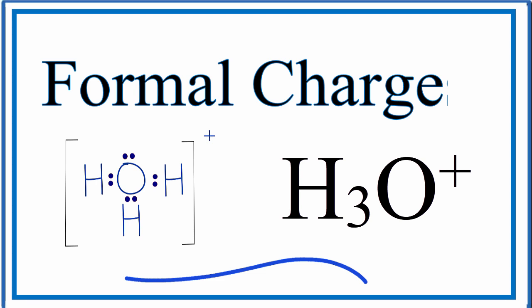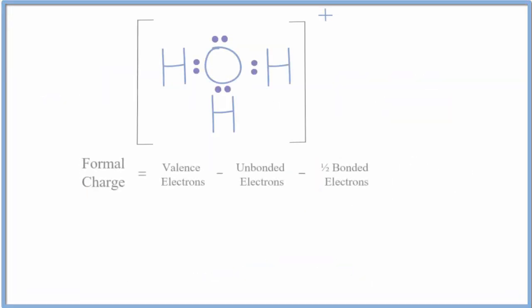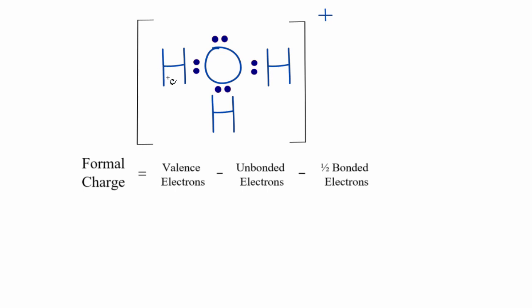To calculate the formal charges for H3O plus, the hydronium ion, let's do the formal charges on each atom. So we'll find the hydrogen here first.